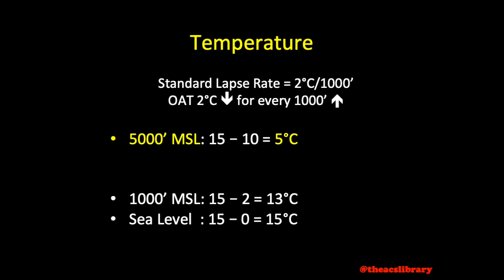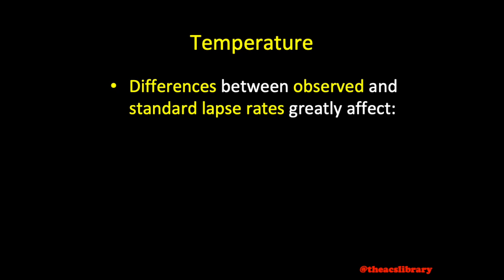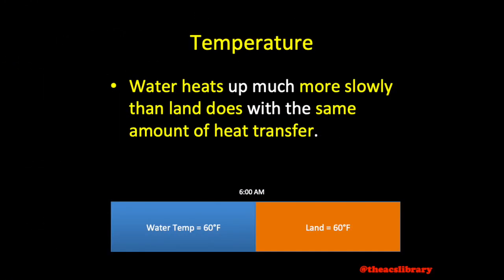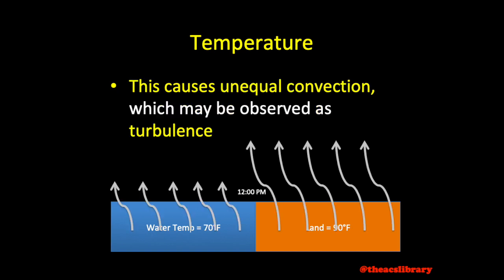The world is never perfect, however, and differences in the observed and standard lapse rates greatly affect cloud formation, thunderstorms, and turbulence. For example, the temperature of water will change much less than the temperature of land with the same amount of heat transfer. Water heats up more slowly than land with the same amount of sunlight. This causes unequal convection, which may cause one to experience turbulence at lower altitudes while transitioning over a body of water to dry land.